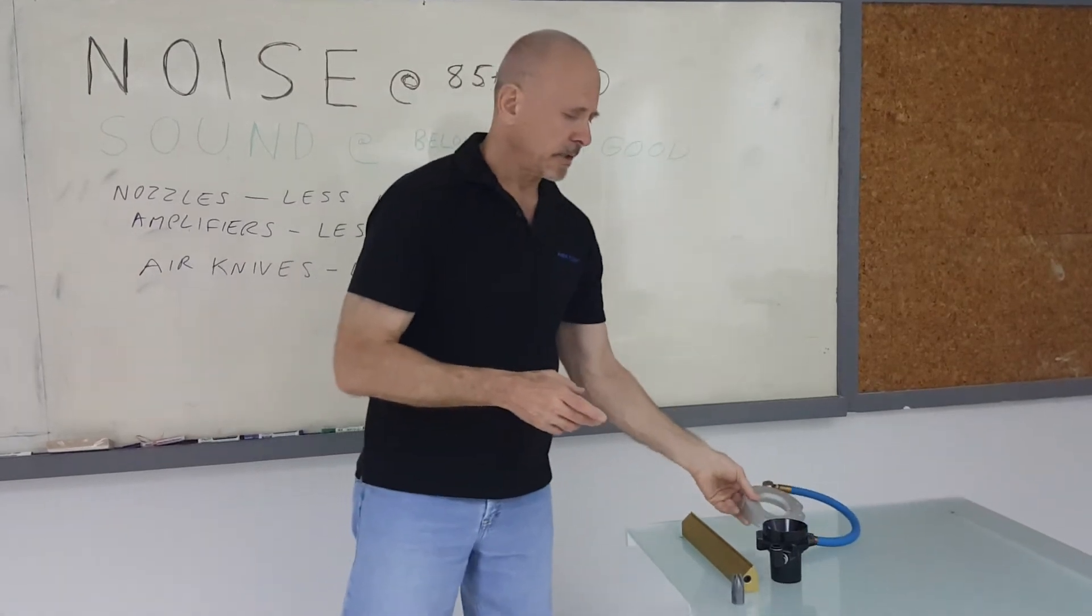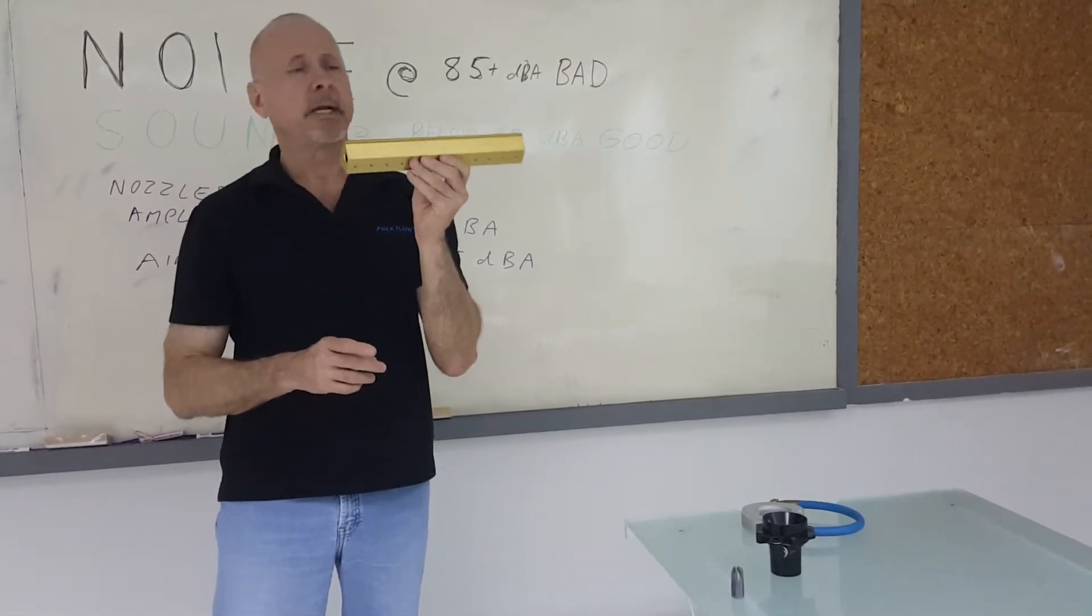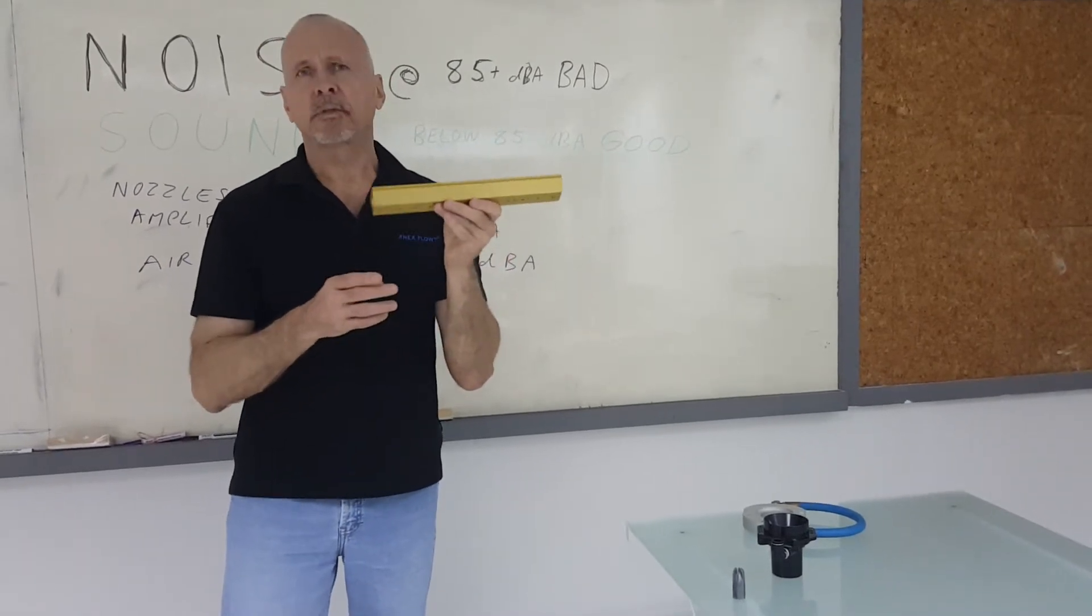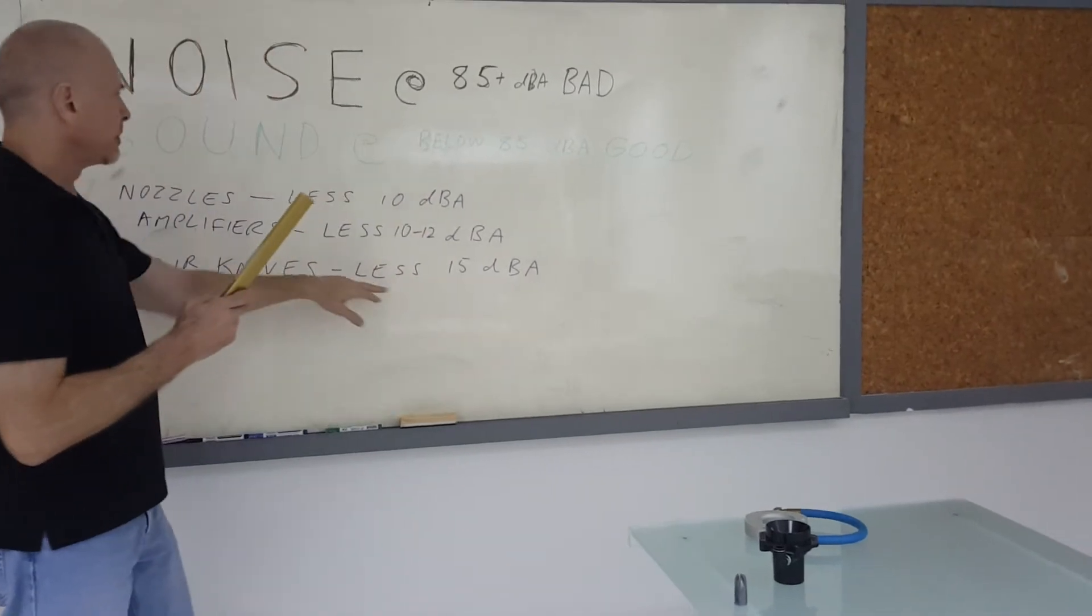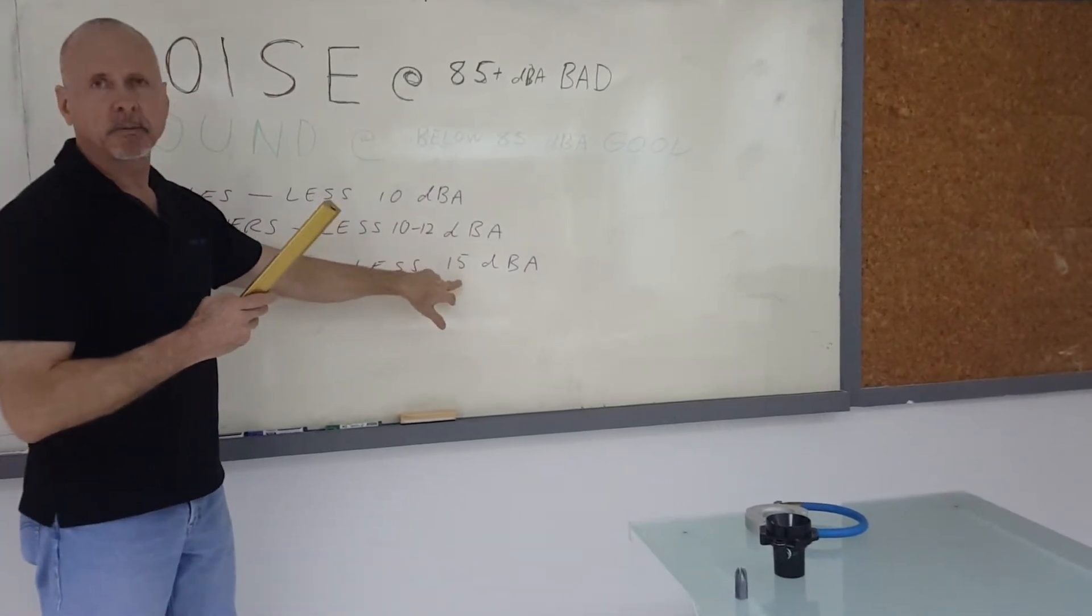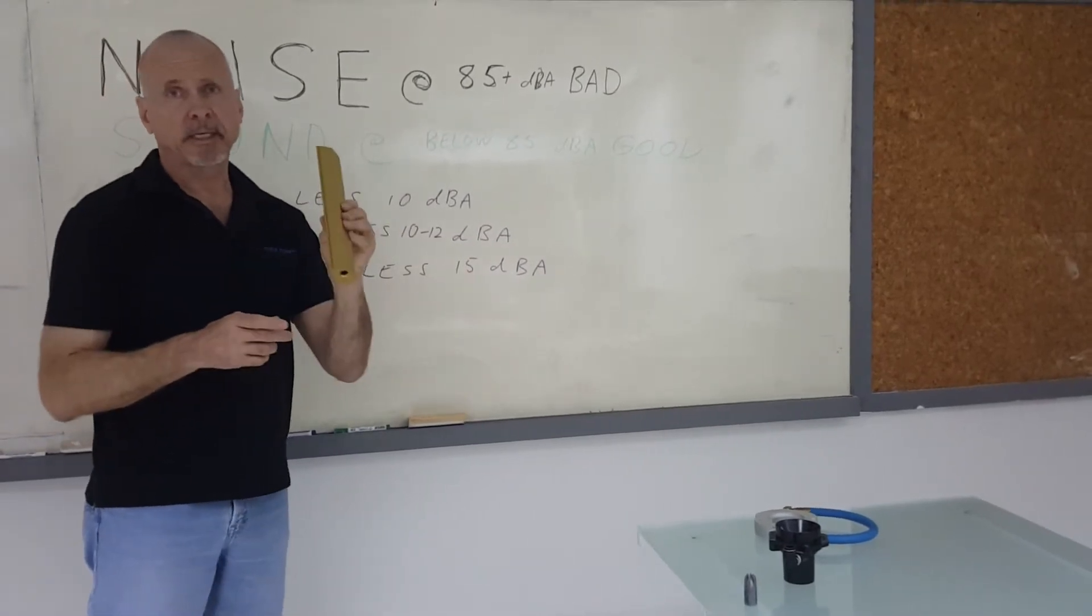A product that will reduce noise the most is an air knife. An air knife replaces pipe with holes or rows of nozzles. You can get a noise reduction of sometimes less than 15 decibels, or actually 15 decibels or more. So that's pretty significant.